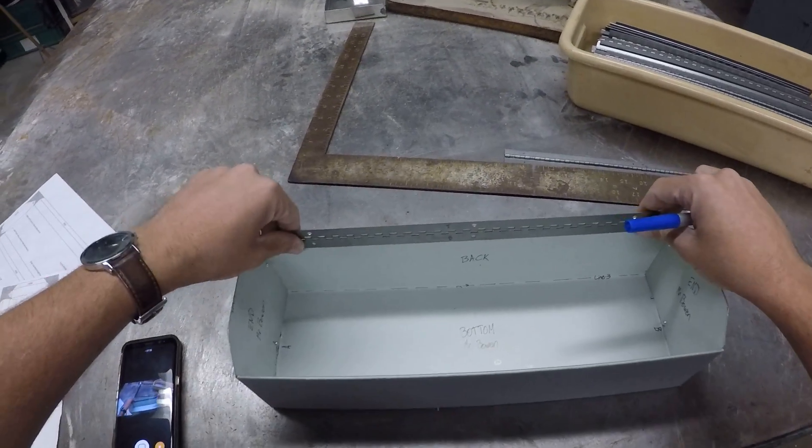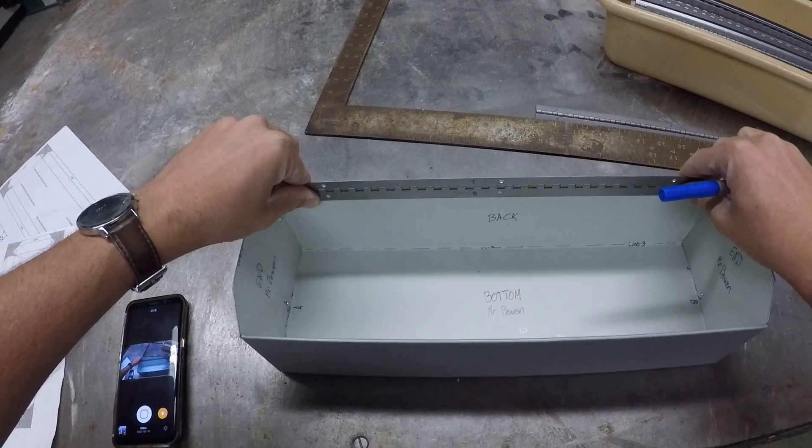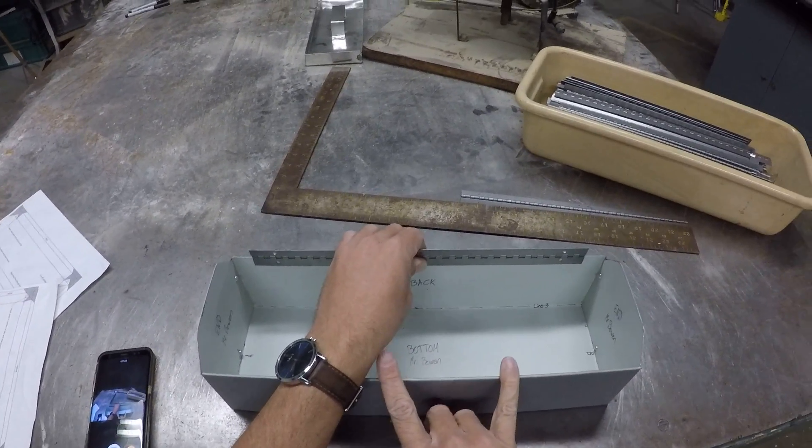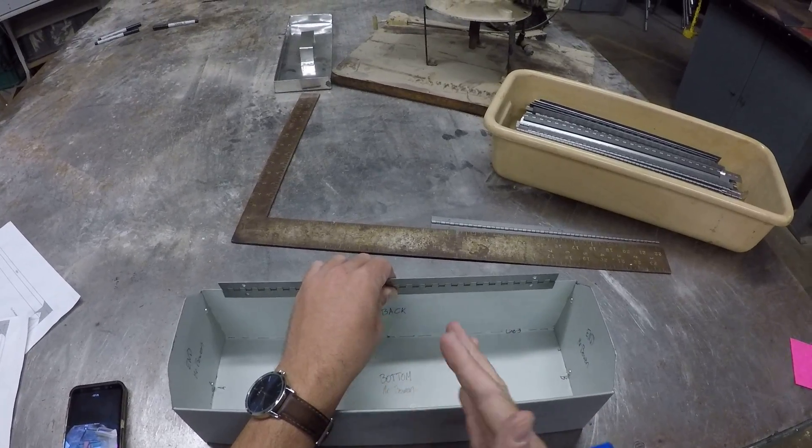So once you have this in place, you bring it flat, you bring it down. Next thing you want to do is you want to center it. Now all of our boxes are just slightly tweaked to different widths.